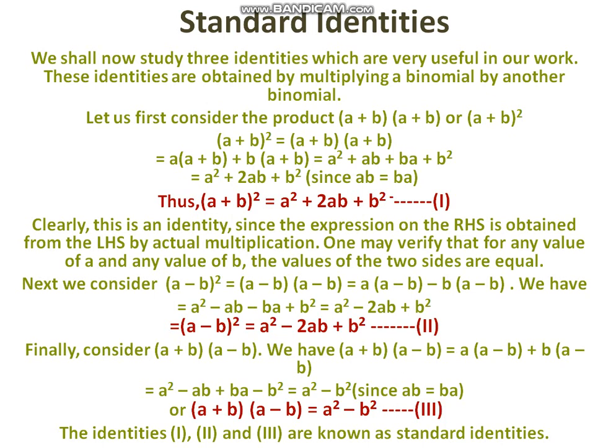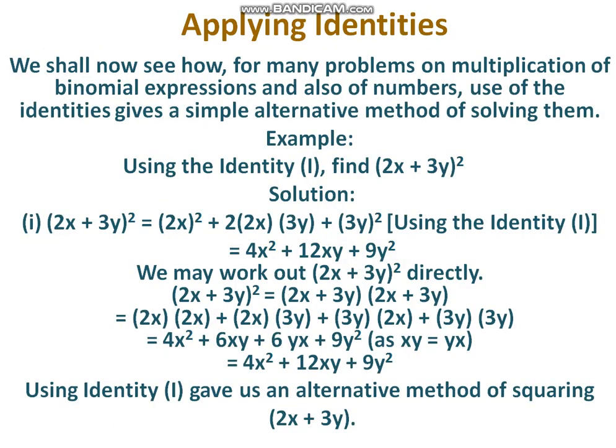Identities 1, 2, and 3 are known as the standard identities. For these standard identities, we can substitute the values of a and b to find the results. Applying identities means knowing the standard form of (a plus b) whole square, (a minus b) whole square, and (a plus b) into (a minus b), and using those identities to solve binomial products.